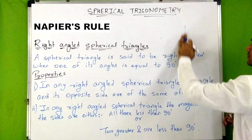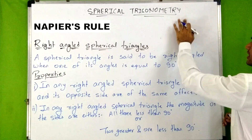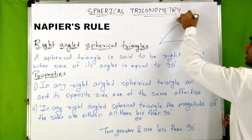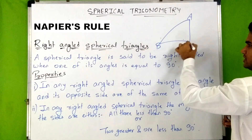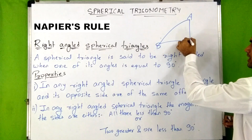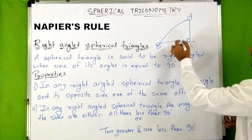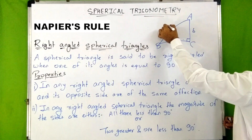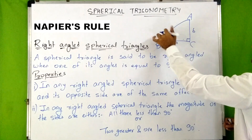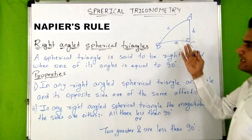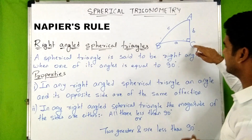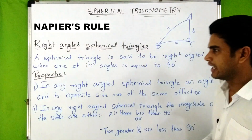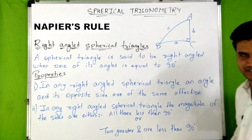For example, consider spherical triangle ABC right-angled at C, with sides small a, small b, and small c. This is a right-angled spherical triangle right-angled at angle C. Apart from this definition, right-angled spherical triangles have some more properties.